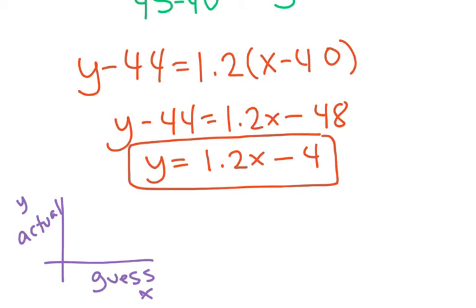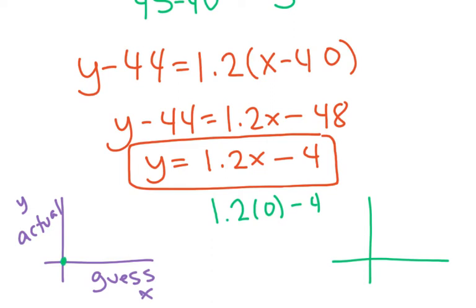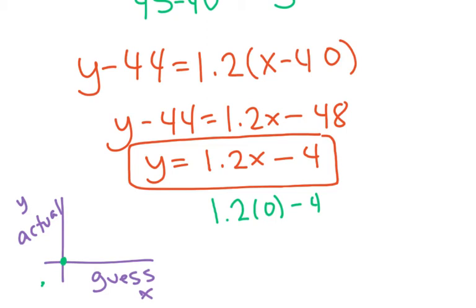If I guessed that somebody was 0, that would mean they were negative 4 years old — which obviously doesn't make sense. If you extended your line to (0, 0), which on your graph was down below the origin, that's okay because lines of best fit aren't true forever — they're just true for a little while. So that's how you find the line of best fit.